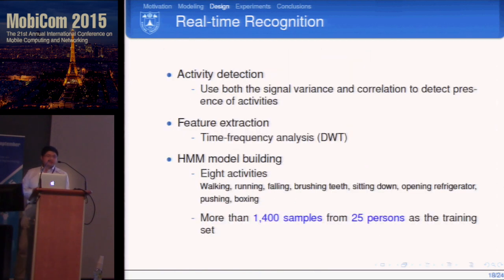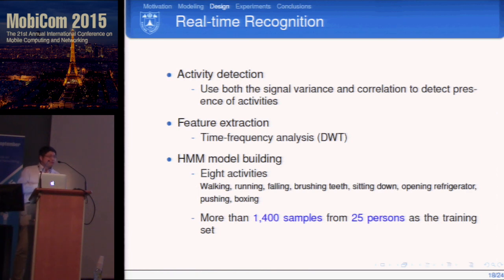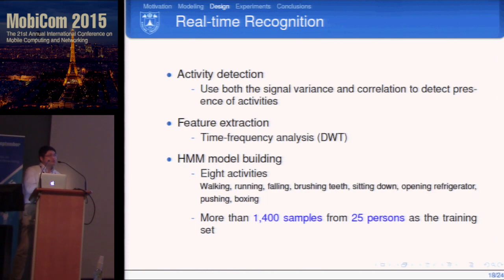After noise reduction, we perform activity detection based on signal variance. When an activity is detected, we use time-frequency analysis — wavelet transform — to extract features, then fit them into the HMM model. We built HMM models for eight activities including walking, running, and sitting down. The model is based on more than 1,000 samples performed by 25 persons.